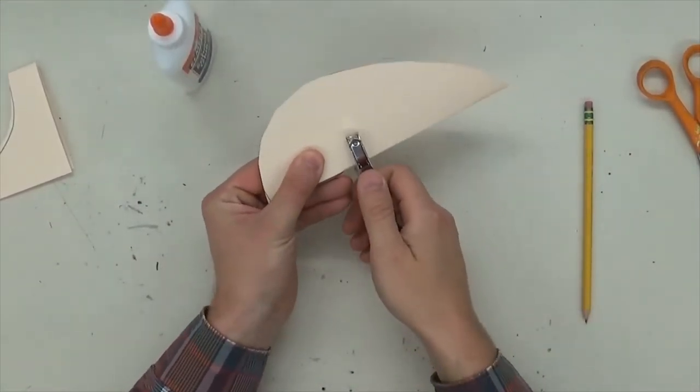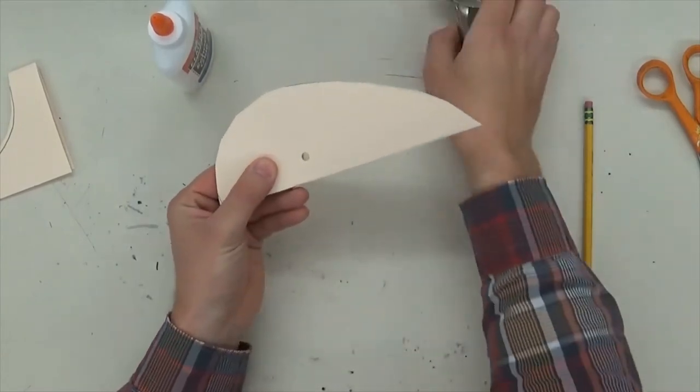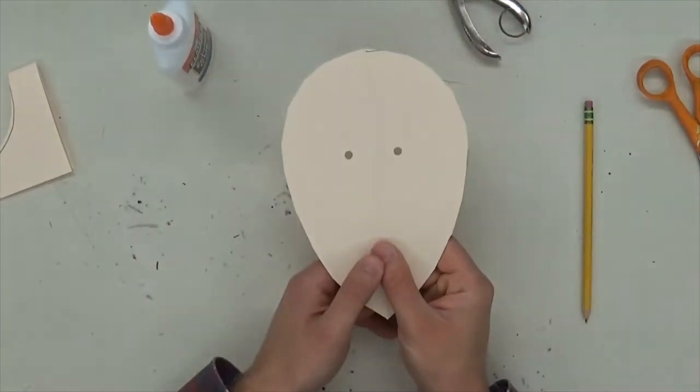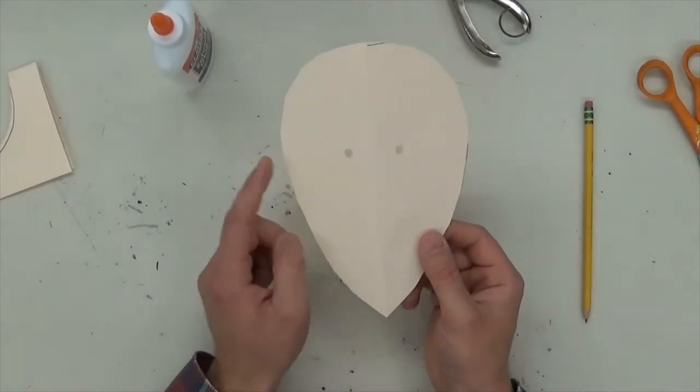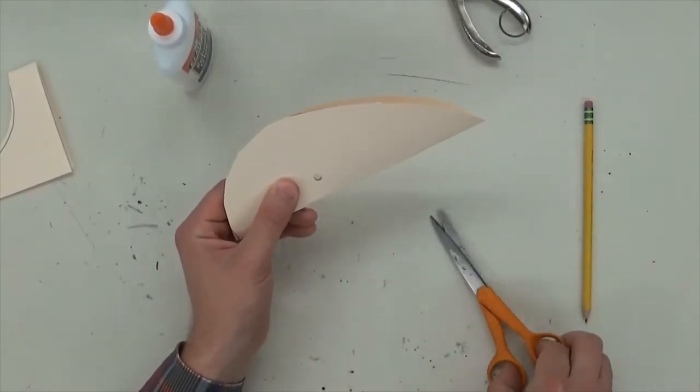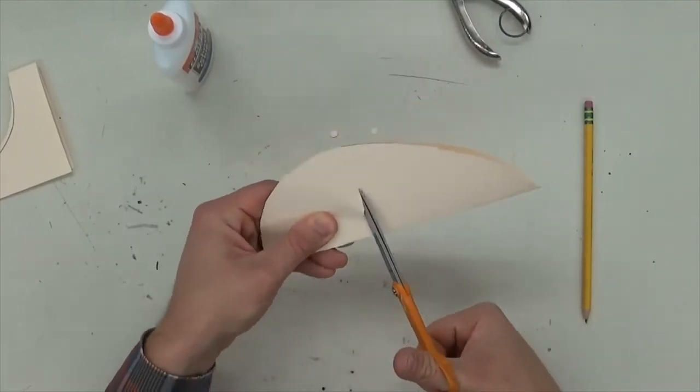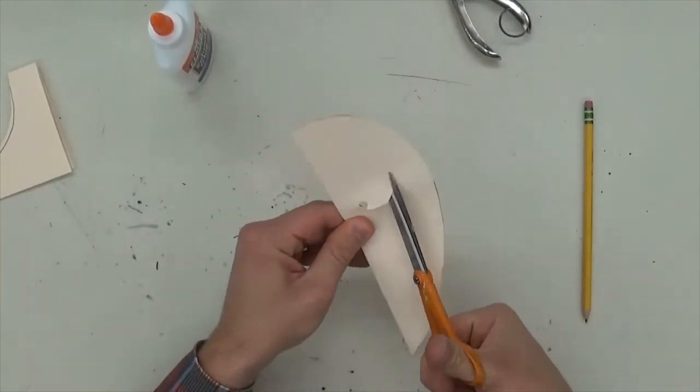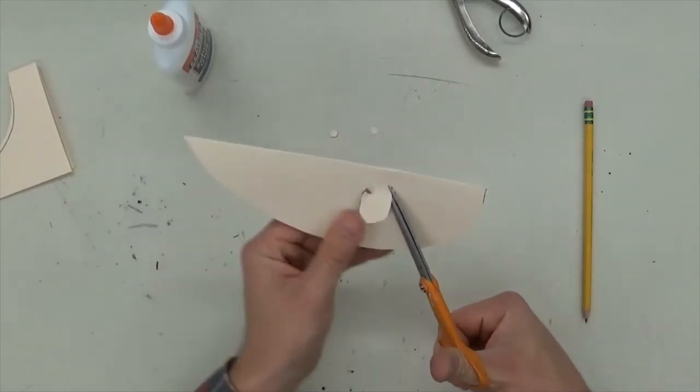You could leave it like that but I'm gonna make mine a little bit bigger. So the hole puncher is just to start the hole. It makes it easier to cut. If you don't have a hole puncher you could just have an adult start it for you.